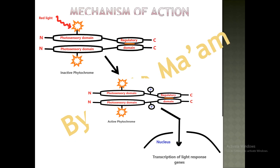Regarding the mechanism of action of phytochrome: inactive phytochrome is present inside the chloroplast, and whenever red light strikes the chromophore there is activation of the phytochrome. This activation is autocatalytic and is performed due to the presence of serine-threonine kinases. Once the inactive phytochrome is converted into active phytochrome, there is autophosphorylation of the phytochrome polypeptides. Once activated and phosphorylated, it is transported to the nucleus where it affects the transcription of light-response genes.